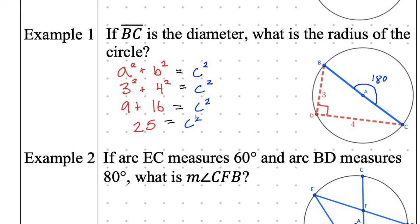Wait — are we done? No! That's not the answer. We know the entire length of the diameter, which is the hypotenuse, is 5. But we're not looking for the diameter — we're looking for the radius. So the final step is to divide by two. The radius is 2.5. Everyone write it down: 2.5, and box it.